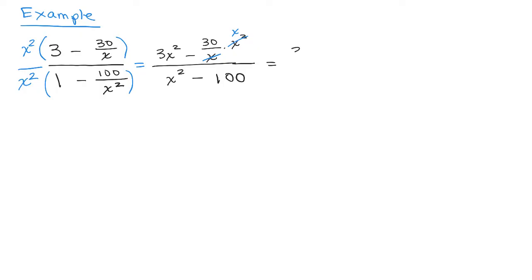So I have 3X squared minus, make sure you don't forget to put 30 times X, 30X, over X squared minus 100. All right, so I did eliminate my fractions by multiplying by the least common multiple, right? Right after I do my distributive property and reduce,